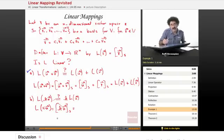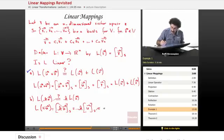But the coordinate vector of K times U with respect to S is equal to K times the coordinate vector of U with respect to S, which equals K times L of U.